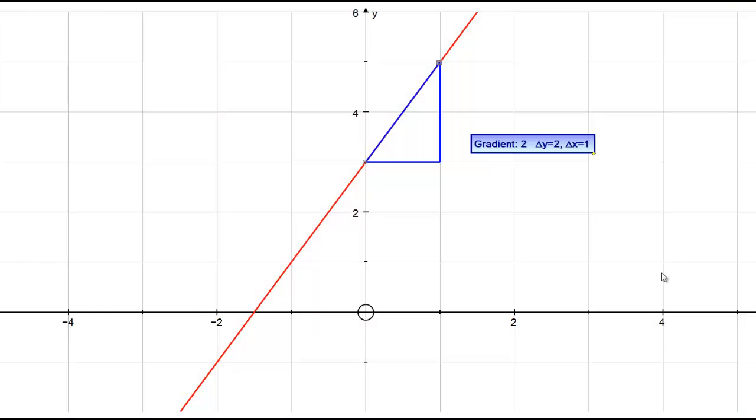For a straight line, we've defined the gradient as the change in y divided by the change in x. So for this line here, for the two points I've given, you can see the change in y here is 2, the change in x is 1.